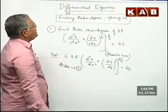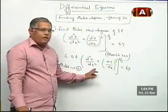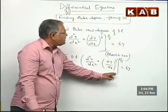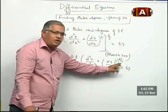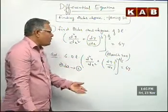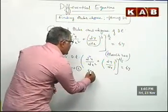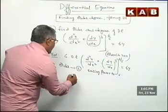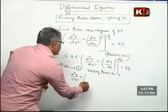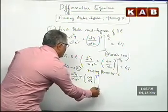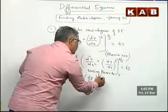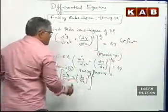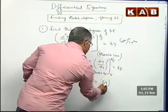Now come to the degree. Whenever degree is to be found, we need a polynomial — the differential equation must be expressed as a polynomial. Here, the power is 6/5, which is not a positive integer. So we raise the power to 5. That gives us: (d²y/dx² + (dy/dx)³)^(6/5 × 5), so the exponent becomes 6, and the right side becomes (6y)^5.